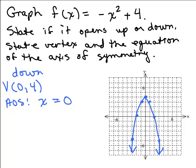When asked to label the axis of symmetry, draw a dotted line along it and write its equation — in this case, x = 0 along the y-axis. If asked to label the vertex, write V(0, 4) at that point. So now you can graph parabolas of the form x² + c or -x² + c, whether c is positive or negative — for example, -x² - 4 works the same way.